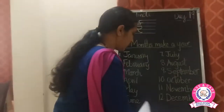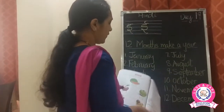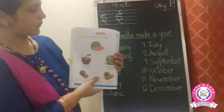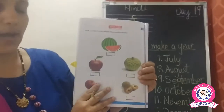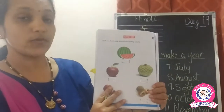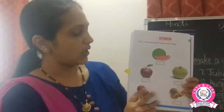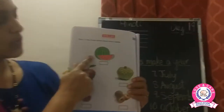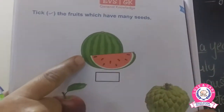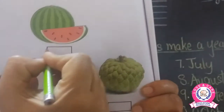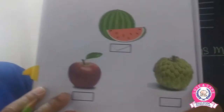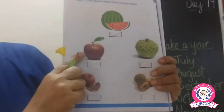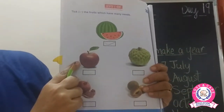Now coming on to the next page — in the seeds worksheet, you have to identify the fruits which have many seeds. Fruits are given here and we have to take those which have more seeds — kis mein bahut zyada seeds hote hain. The first picture is watermelon — watermelon mein bahut saare seeds hote hain.